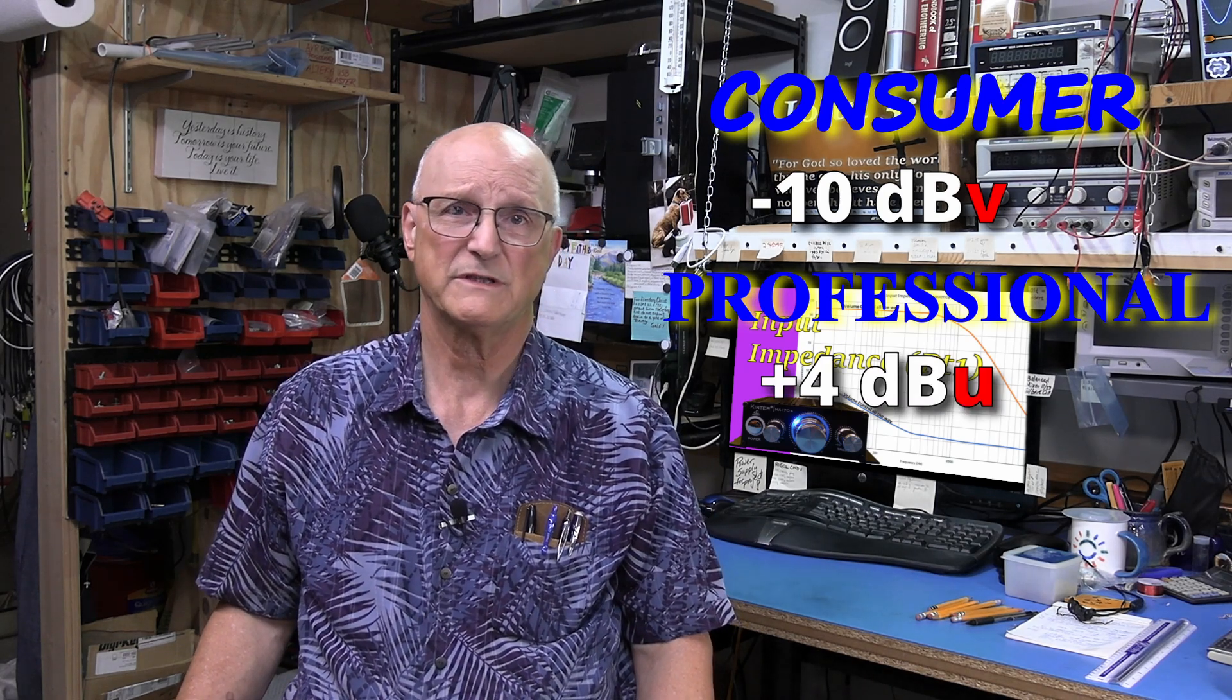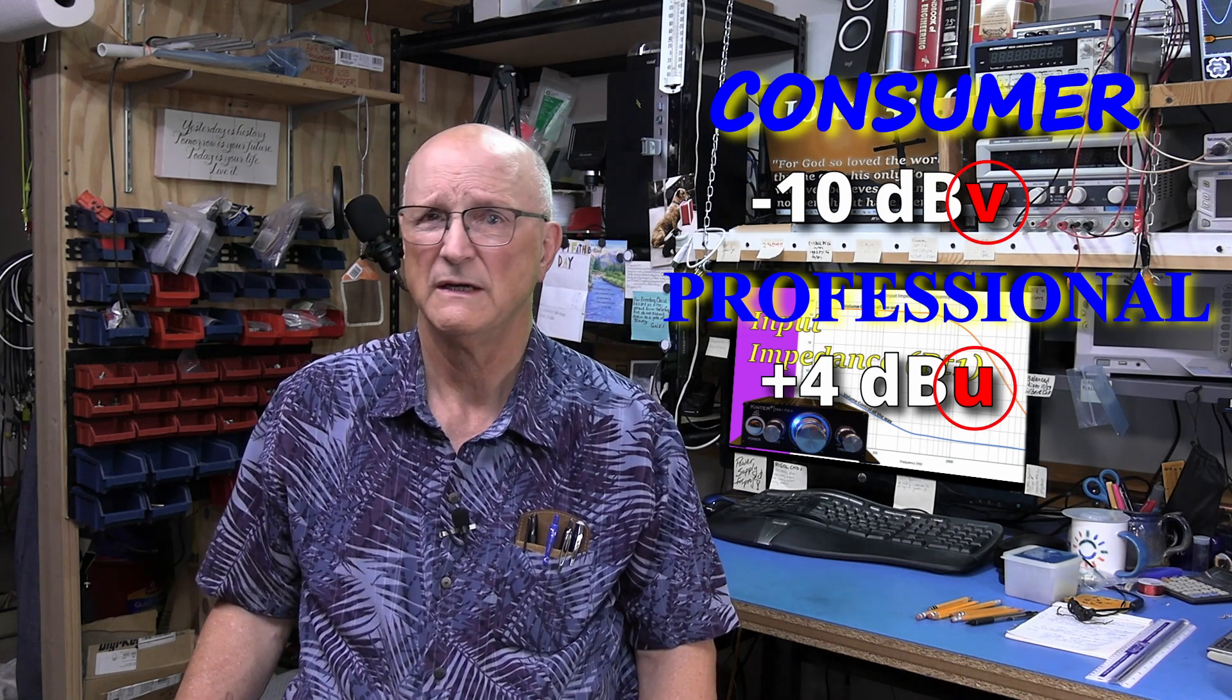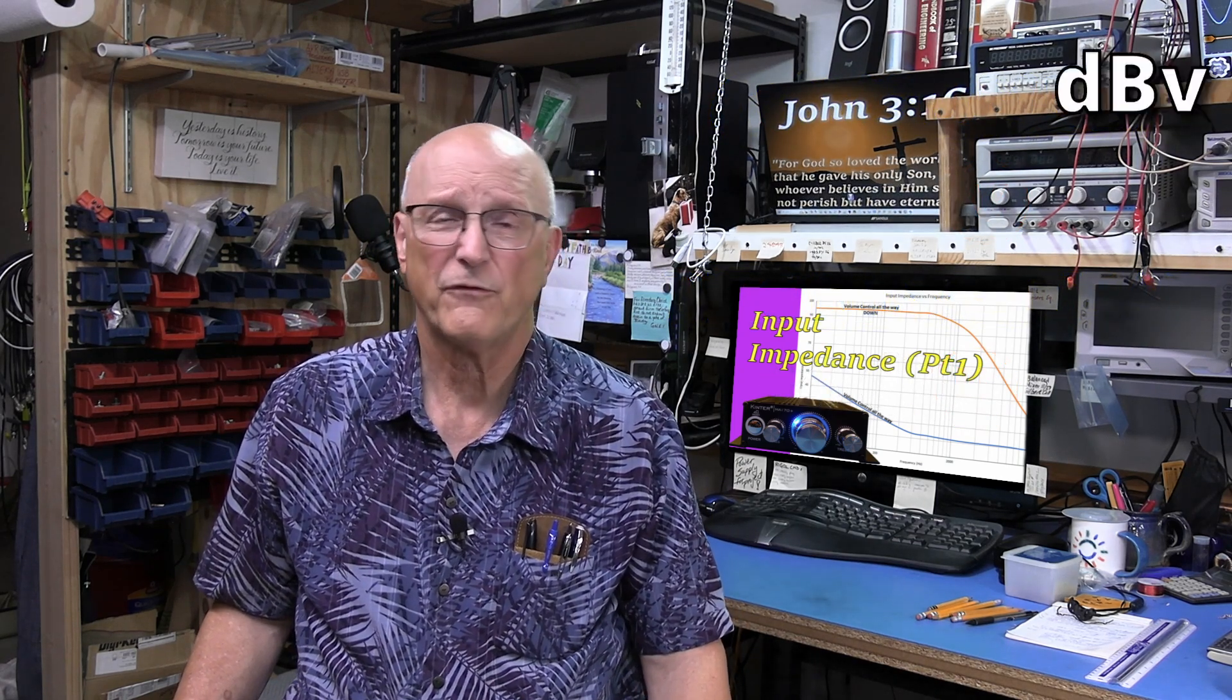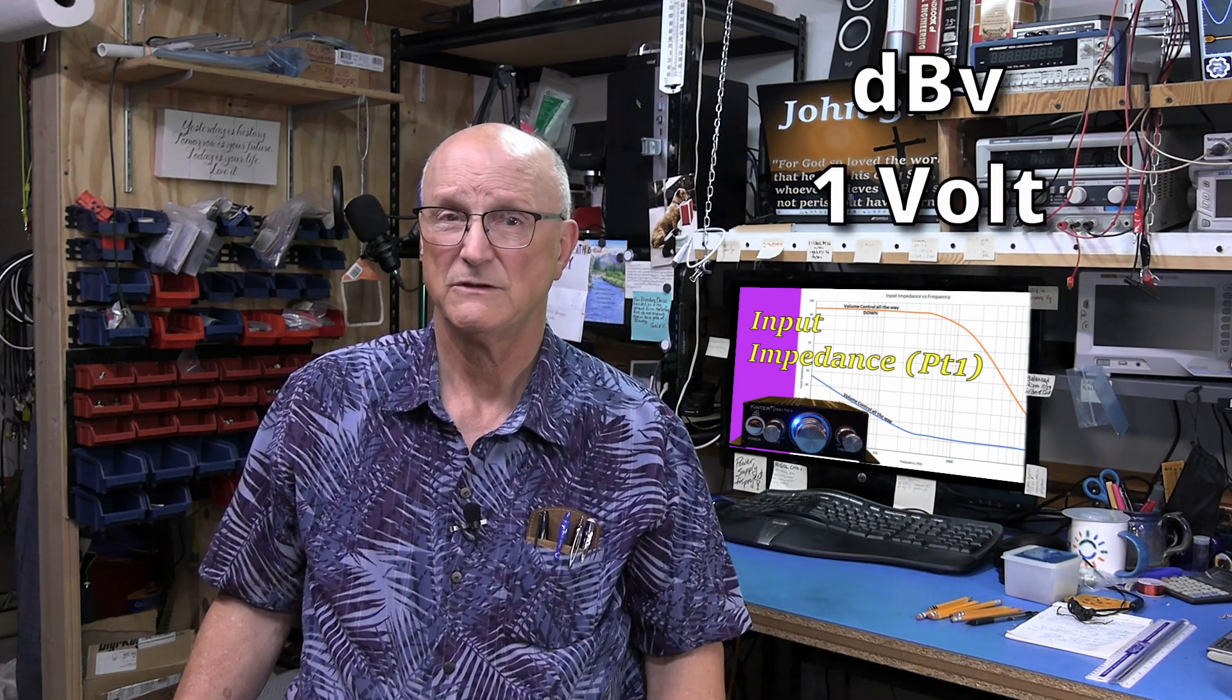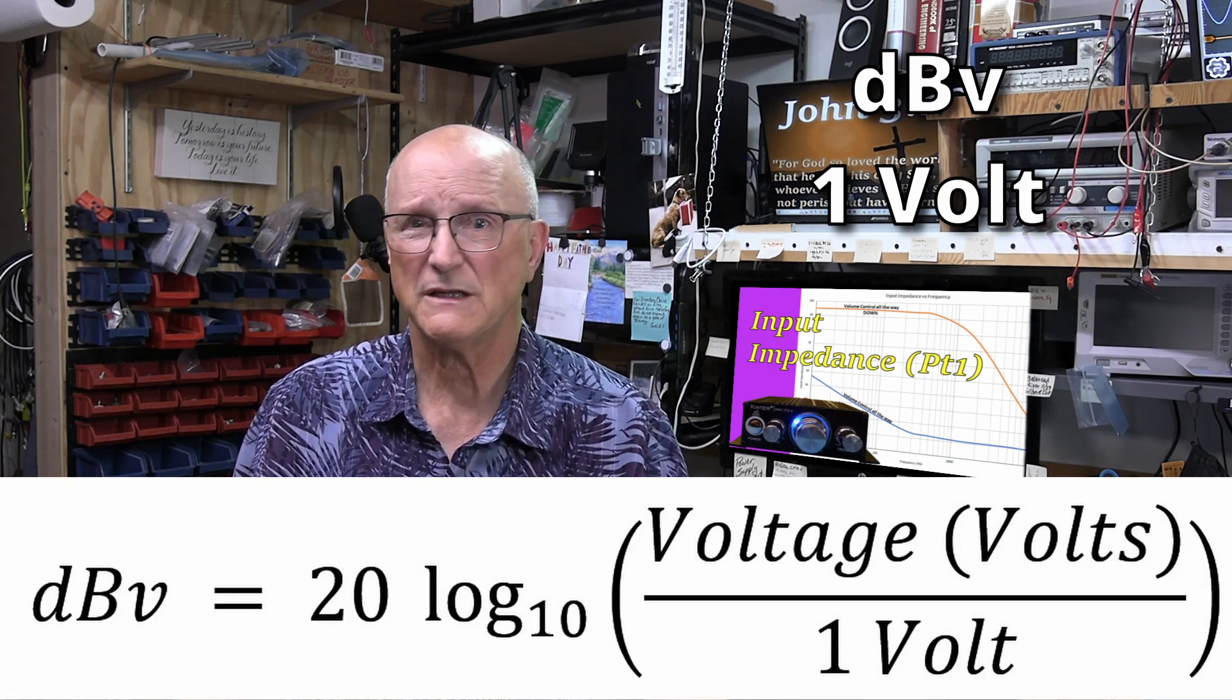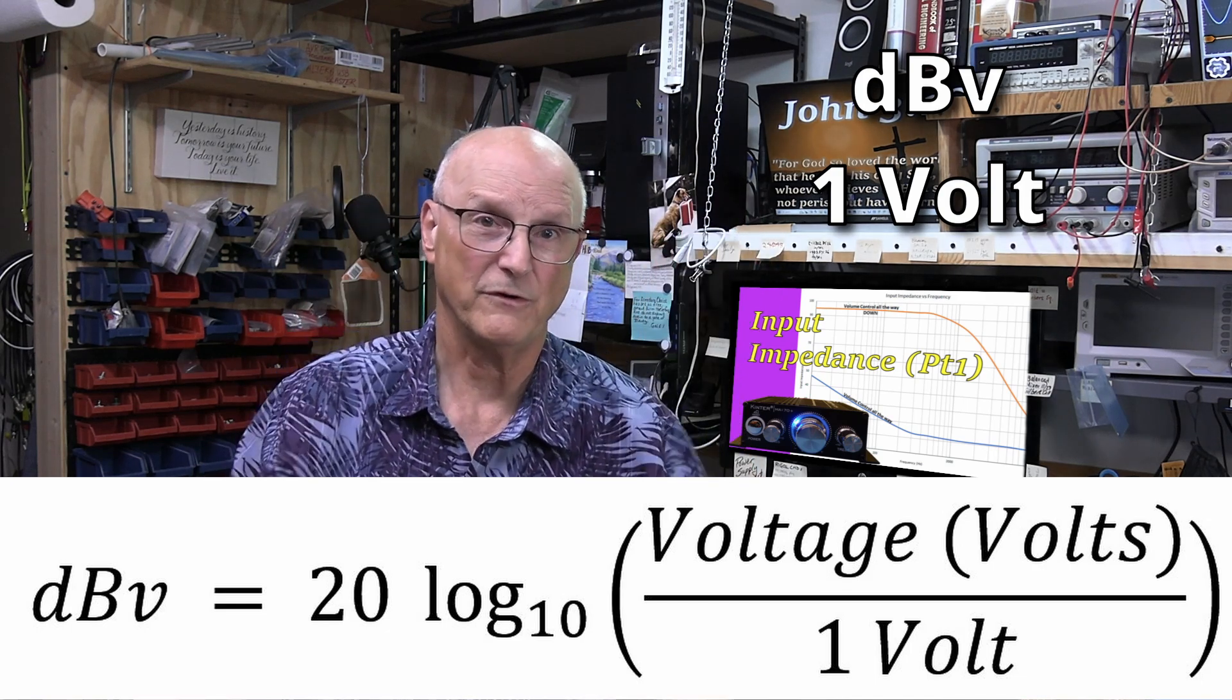Okay, so there is the whole dBU versus dBV issue that I will briefly unravel. In short, the standard for dBV is 1 volt. So dBV is equal to 20 times the log to the base 10 of the voltage in volts divided by 1 volt.